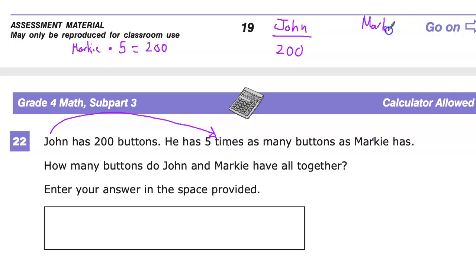Once we have that, we can get to the next part of our question, which says how many buttons do John and Markie have together? Since it's have together and we're adding them, I'm just going to put a plus there. I might go ahead and put 200 plus down here, then I'll figure out what Markie is. That way I can keep all the pieces in motion.